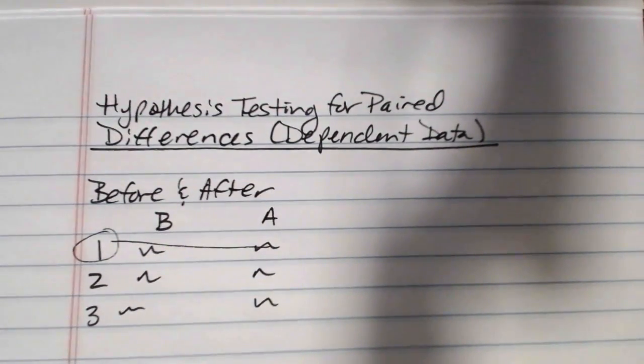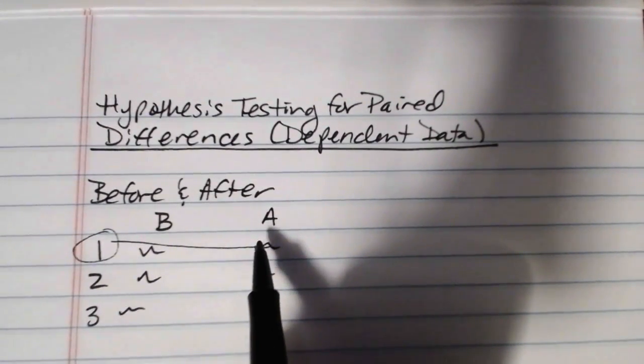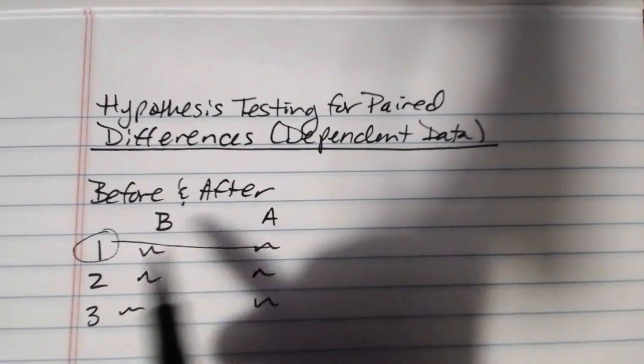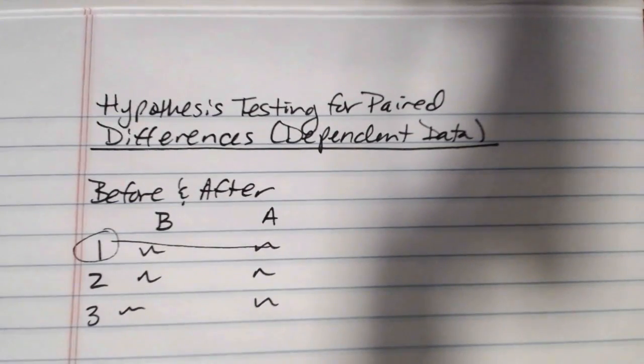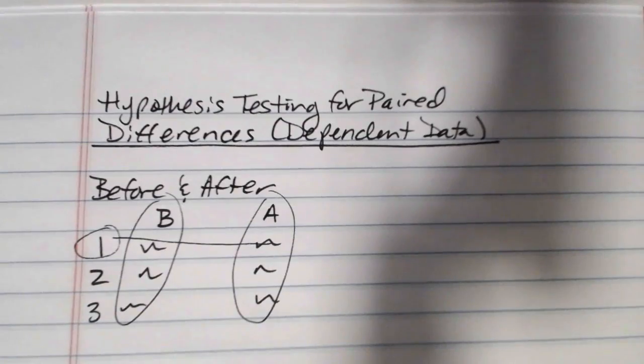If you started out before your diet weighing 200 pounds, you can't expect that same person necessarily after their diet to come down to 105. As opposed to somebody who starts at 110, it's perfectly reasonable to expect them to come down to 105. So the before would have a big impact on the after. And therefore, these data are not two independent samples. The befores are not independent from the after. So we need a different method for doing a hypothesis test for that than we would use if the data were independent.